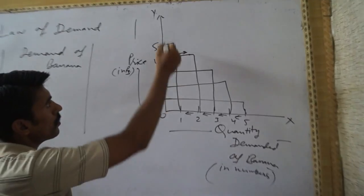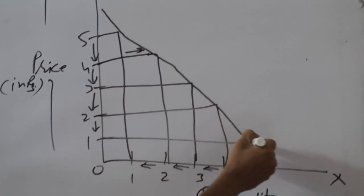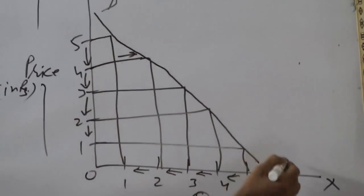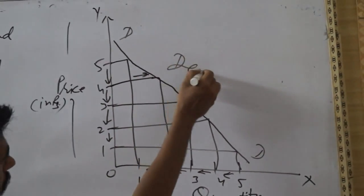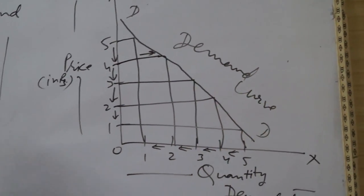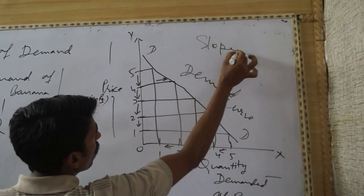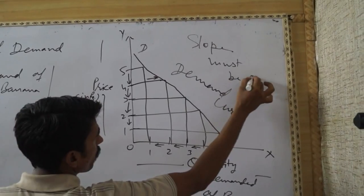The curve will be like this. This is D, the demand curve, on the basis of law of demand. Its slope must be negative.